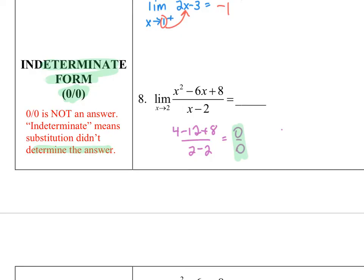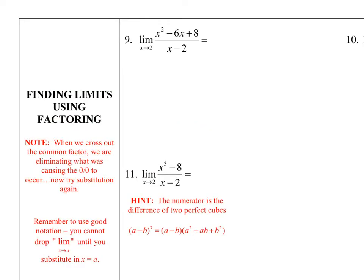And that brings us to our next method, which is called factoring. So after I've done my direct substitution and I get the dreaded 0 over 0, I need to look for something else. So I'm going to factor number 9. If you recall what you learned about graphs in Algebra 2, when I have a common factor like this x minus 2, what that means is my graph actually has a hole at x equals 2. So the graph of this rational function, it's just going to look like the graph of x minus 4, but it's going to have a hole at this x equals 2. So what I'm going to do is I'm going to cross these out, and I'm canceling out the hole.